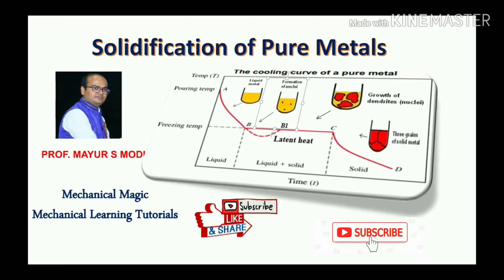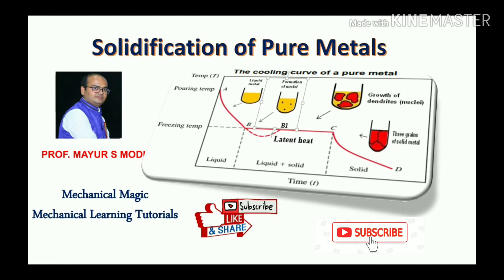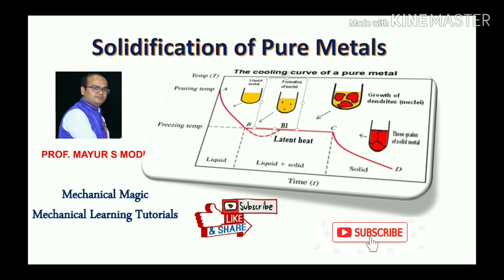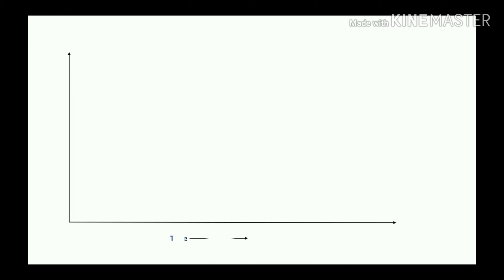Welcome to my YouTube channel, Mechanical Magic - Mechanical Learning Tutorials. Today we will be discussing the solidification of metals, basically only for pure metals, which are considered as 100% pure metal. The x-axis represents time, the y-axis represents temperature, and we will be plotting a graph between temperature and time, which is called the cooling curve of a pure metal.